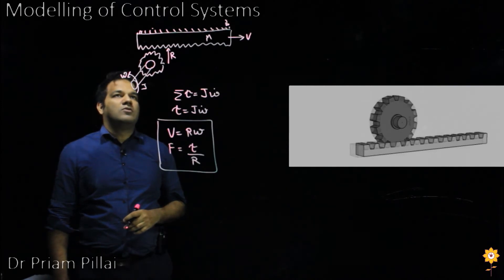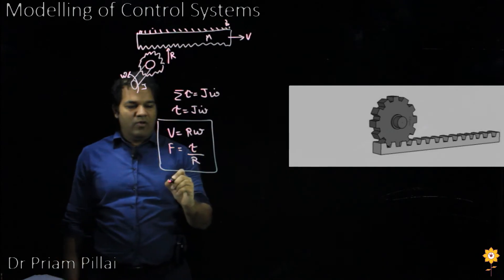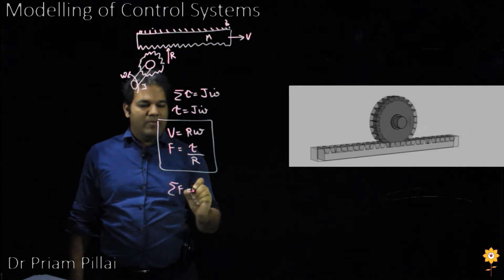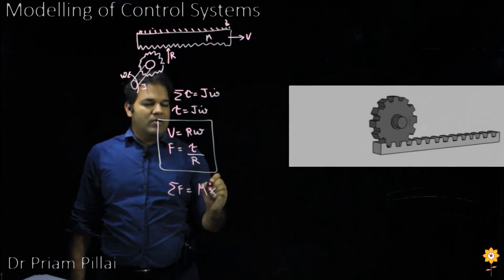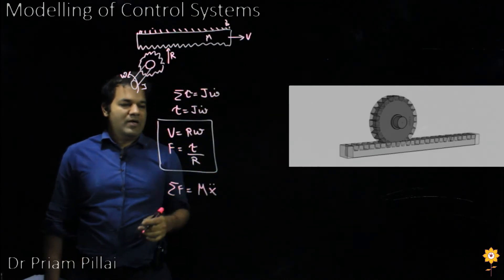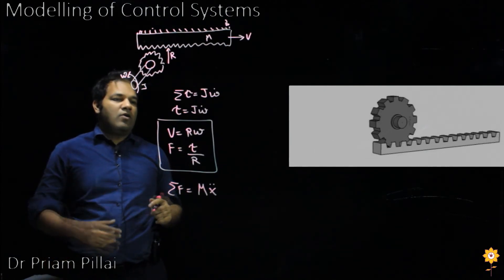Let us also consider a force balance on this mass. So sum of all the forces on that mass will be given by M times X double dot, where X is the position of that mass.